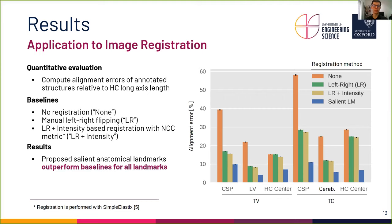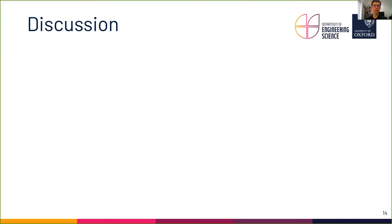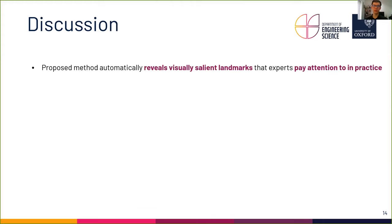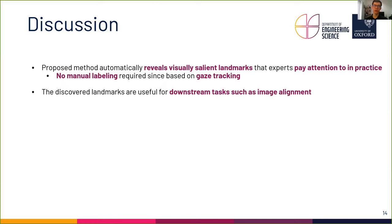The lowest registration errors are observed for the alignment of the lateral ventricle and the cerebellum. Overall, we can summarize that the proposed method is successful at automatically revealing visually salient landmarks that experts pay attention to in practice. To the best of our knowledge, this is the first such method to be proposed. Moreover, the discovered salient landmarks are useful for the downstream task of registering the ultrasound images, doing so by ignoring irrelevant information just like a human would.